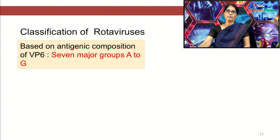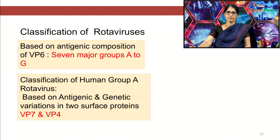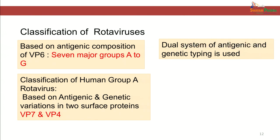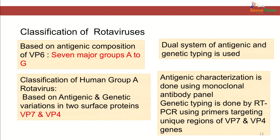Coming to classification of rotaviruses: based on the antigenic composition of capsid component VP6 present in the middle layer, 7 groups of rotaviruses A to G have been identified. Rotavirus A is the most important cause of diarrhea in children. Human group A rotavirus is further classified based on the nature of VP7 and VP4 antigens, using a dual classification system similar to influenza virus. Antigenic characterization is done using monoclonal antibodies and genetic characterization is done by RT-PCR using primers targeting unique regions of VP7 and VP4.